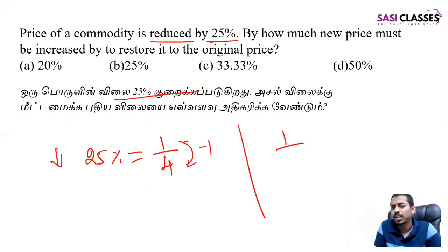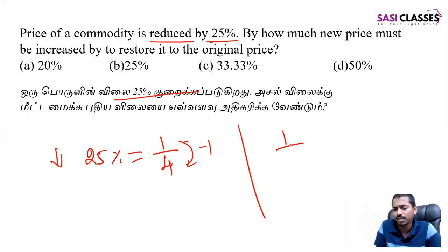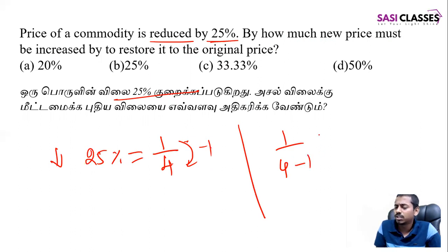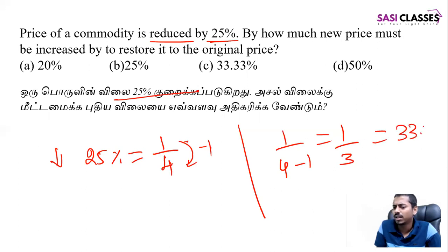We will see how much the new price must be increased to restore its original price. So the whole unit is less. One by 4 is reduced — one unit is less, minus one. So: 1 divided by (4 minus 1) equals 1 by 3. One by three.